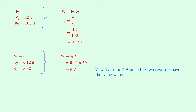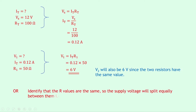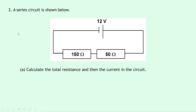That was a long way of doing it, but there's a much quicker way. We could simply identify that the resistance values are the same, so the supply voltage splits equally between them — 6 volts across each.